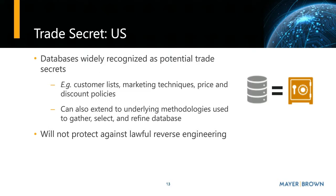One thing to point out about that definition that may bear on databases: the definition requires that the information not be readily ascertainable through proper means, which is a reference to what's sometimes called reverse engineering. If you have a database of, say, names and addresses with certain criteria, it may be that you can find a certain person's name and address through other sources, but that does not defeat trade secret protection if it would be very difficult to recreate the entire database from public sources. Databases have been widely recognized by US courts as a form of trade secrets. Customer lists have again been recognized as trade secrets. Trade secrets can also cover the methodology used to gather, select, and refine a database — the process you use to collect it, or even the way you manage the data. However, US trade secret law will never protect against lawful reverse engineering.